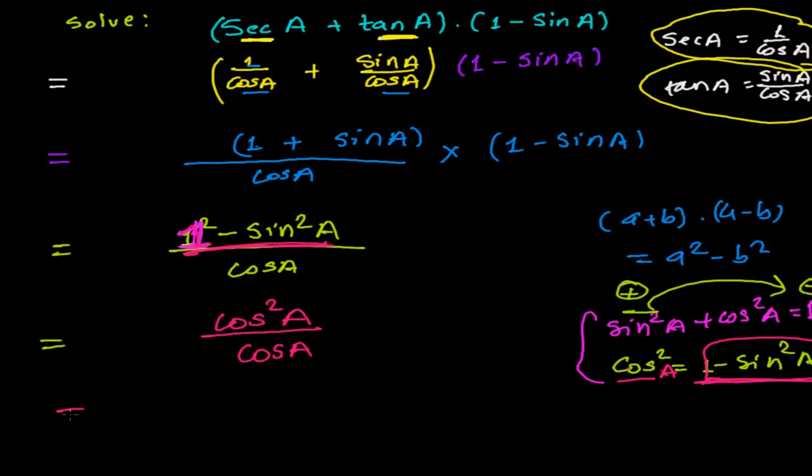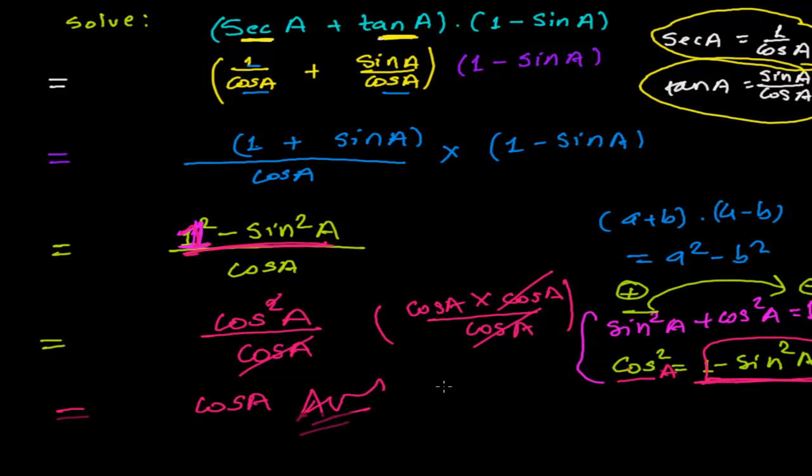Finally, cos squared A is cos A times cos A divided by cos A. These cancel out and I get cos A. This is your final answer. I hope you understand. If there's any problem, comment below and I'll clear your doubts. We'll meet in the next video. Bye-bye.